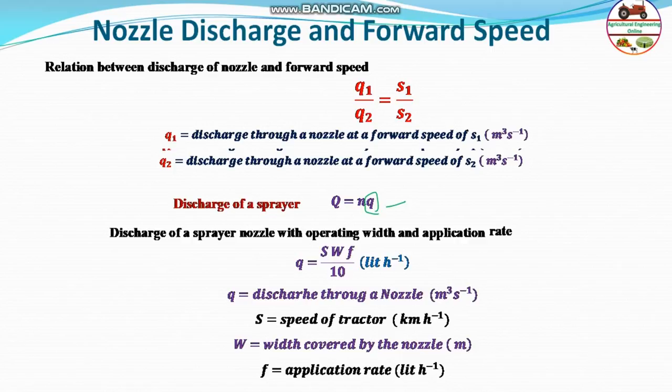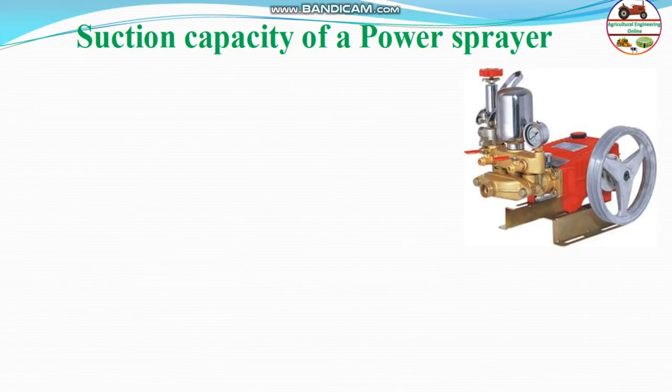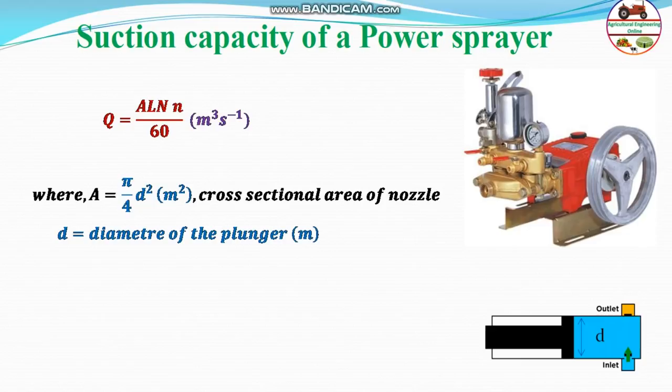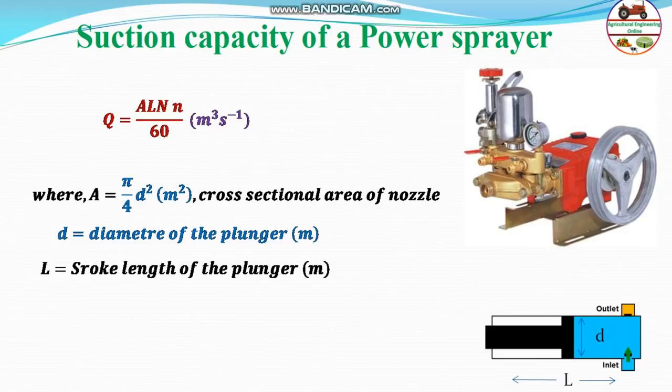For the suction capacity of a power sprayer pump: the discharge depends on the area of the piston (π/4 × D²), where D is the diameter of the plunger. L is the stroke length of the plunger, N is the RPM of the drive, and n is the number of plungers. Total pump discharge equals A × L × N × n / 60 (cubic meters per second).